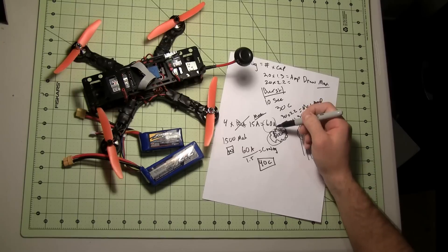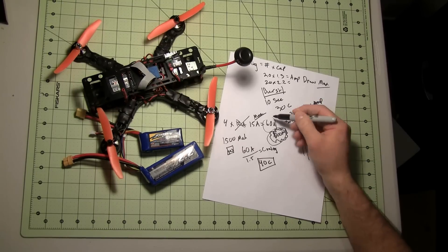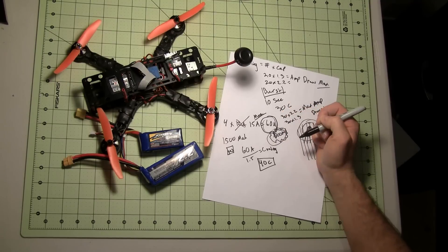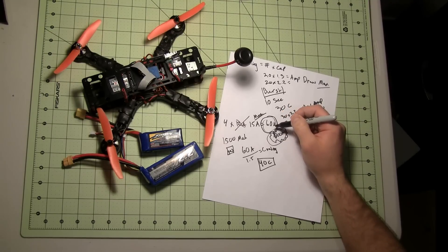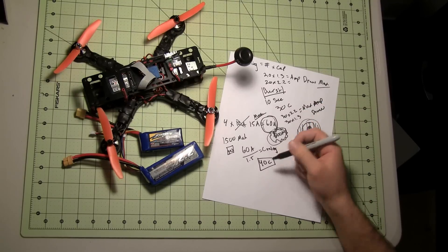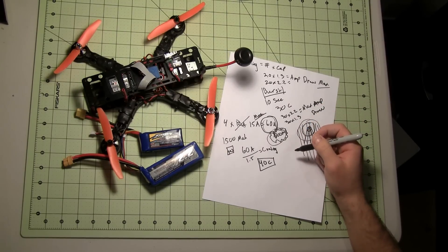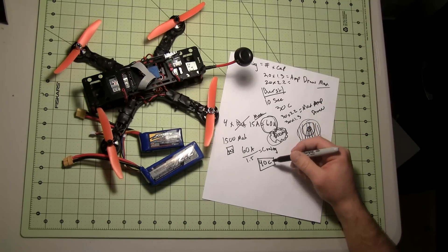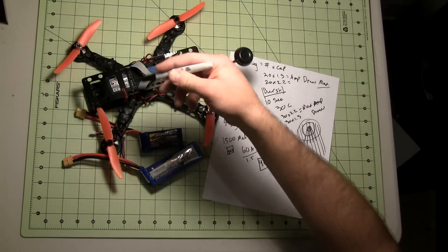If anything past 40C, I'm just wasting because I can't draw that amount of amperage, otherwise my ESCs will explode. So why waste my money on getting an 80C battery when I can only pull a max of 40C without destroying my quad?